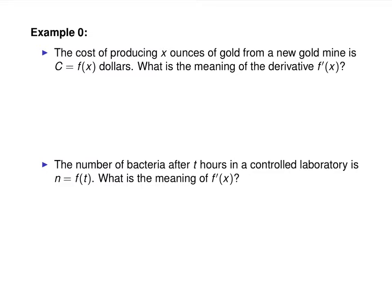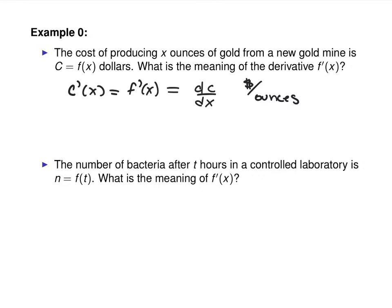So this we discussed already a little bit. The cost of producing x ounces of gold from a new gold mine is c equals f of x dollars. What is the meaning of the derivative? So in this case, c prime of x, or f prime of x — if I wrote it with the other notation, it'd be dc/dx. The most helpful thing for figuring out what these things mean is looking at that notation and figuring out the units. C is cost, so that's in dollars. What is x measured in? So this is really dollars per ounce — it's telling you how the cost is changing in dollars per ounce.